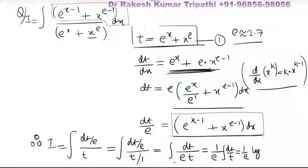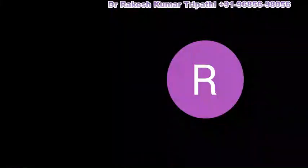The integral of dt/t is log|t| base e plus C. Substituting back the value of t, the final answer is (1/e)·log|e^x + x^e| base e plus C.